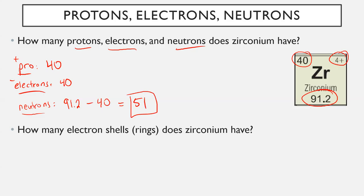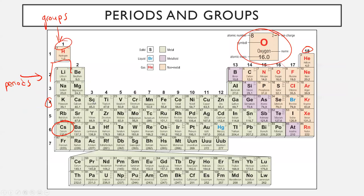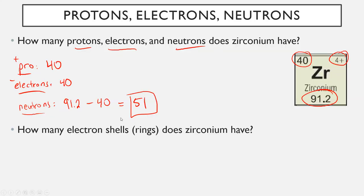For the last part — how many electron shells, or rings, does zirconium have? You wouldn't be able to figure that out from just the element box alone, but if you look at the whole periodic table, you can see that zirconium is in period number five. The period number tells you how many rings an atom has. So zirconium has five electron shells.